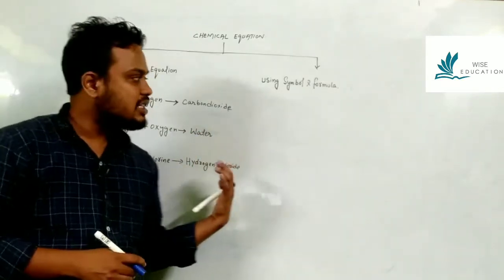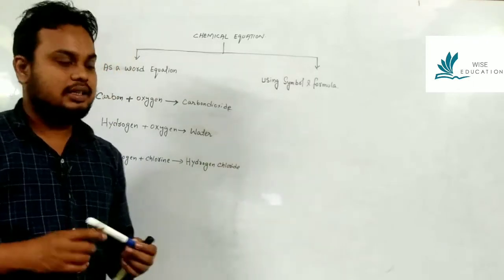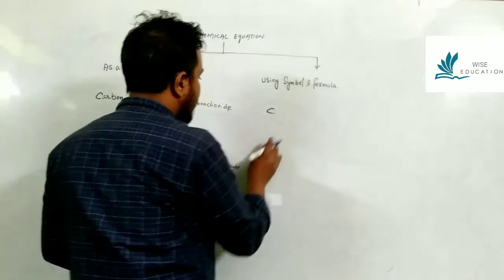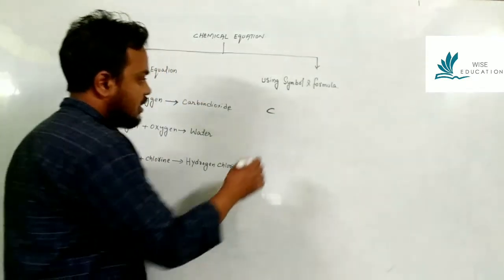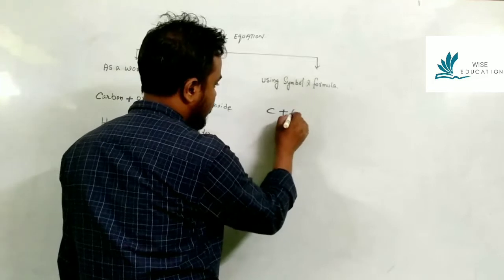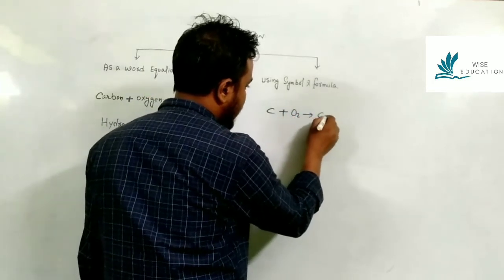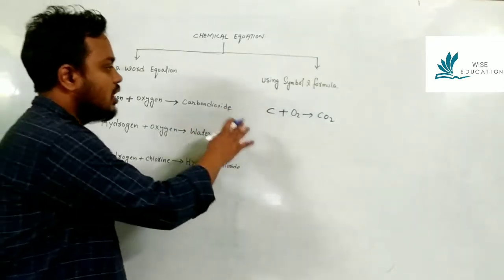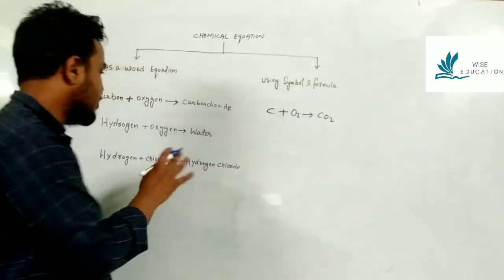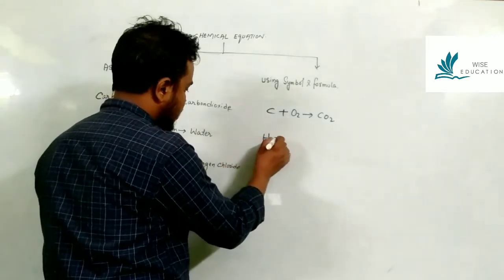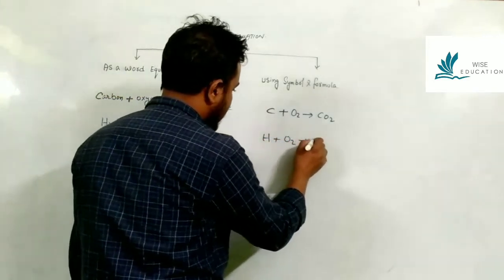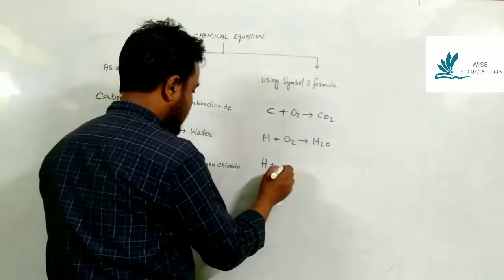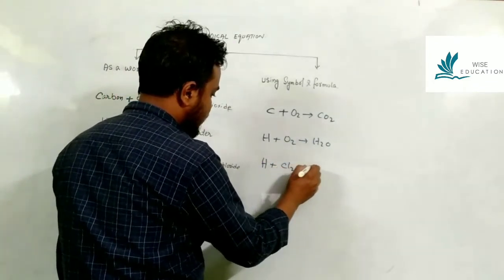Now let's see how we use formula and symbols. When reactants are represented by symbols: carbon reacts with oxygen O2 to form CO2 — this is your formula or symbol equation. Similarly, when hydrogen combines with oxygen it forms H2O. And hydrogen plus chlorine forms HCl.